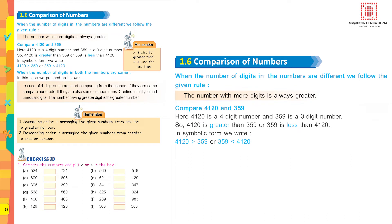Comparing of numbers: when the number of digits in the numbers are different, we follow the given rule. The number with more digits is always greater. Compare 4120 with 359. Now 4120 is a four-digit number and 359 is a three-digit number.